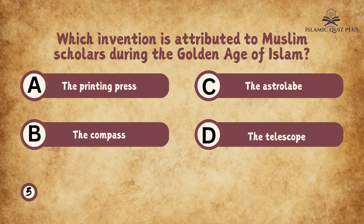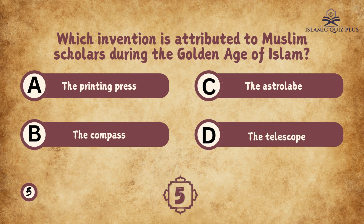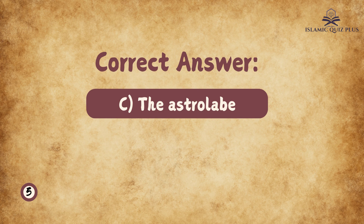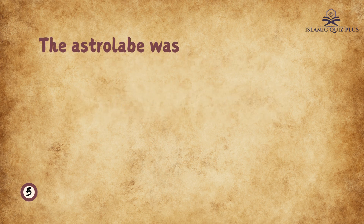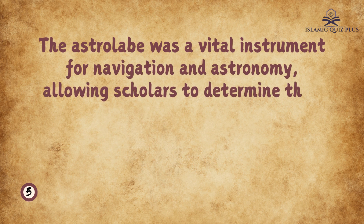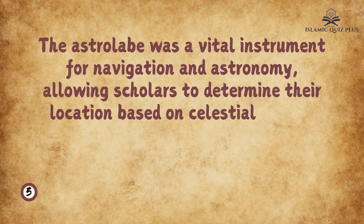Question 5: Which invention is attributed to Muslim scholars during the Golden Age of Islam? A. The printing press, B. The compass, C. The astrolabe, D. The telescope. The correct answer is C. The astrolabe was a vital instrument for navigation and astronomy, allowing scholars to determine their location based on celestial bodies.